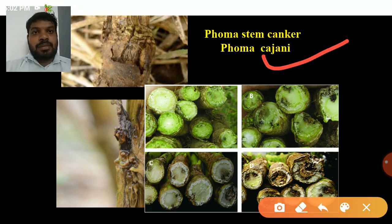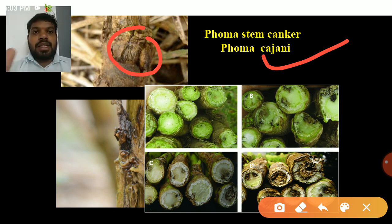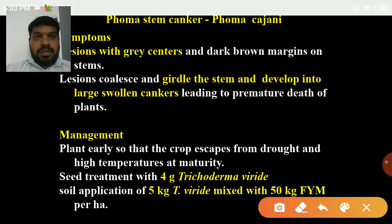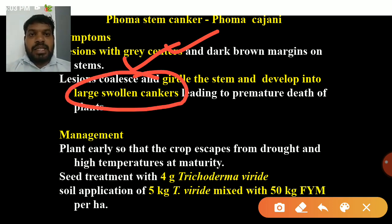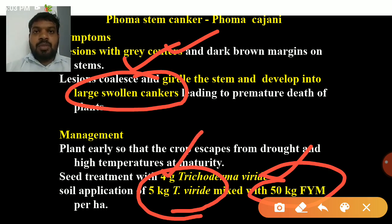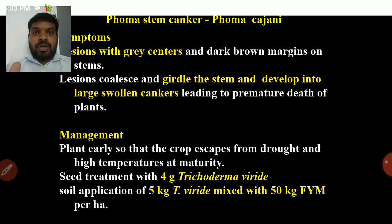Phoma stem canker — causal organism is Phoma cajani. It mainly infects the collar region of the plant and produces a cankerous appearance on the collar region, with bulged and cankerous outgrowth. On cutting the infected portion, you can see irregular brown color lesions and dark brown margins on the stem, developing as large swollen cankers. Management: seed treatment with 4 grams of Trichoderma viride per kg of seed and soil application of Trichoderma viride 5 kg mixed with 50 kg of FYM.